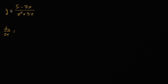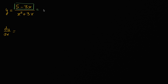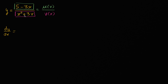It might immediately jump out at you that y is being defined as a rational expression here, as the quotient of two different expressions, or you could even view this as two different functions. You could view the numerator as u of x, and the denominator as v of x. So if you're taking the derivative of something expressed as the quotient of two different functions, you could use the quotient rule.